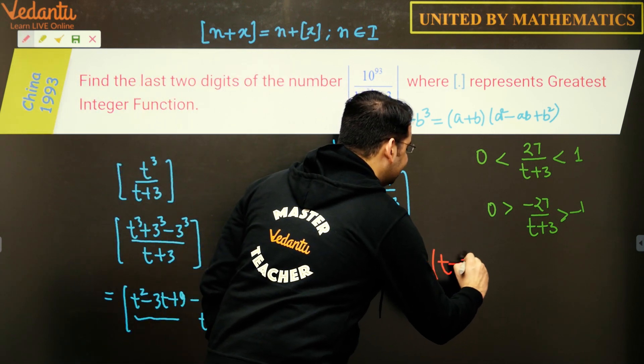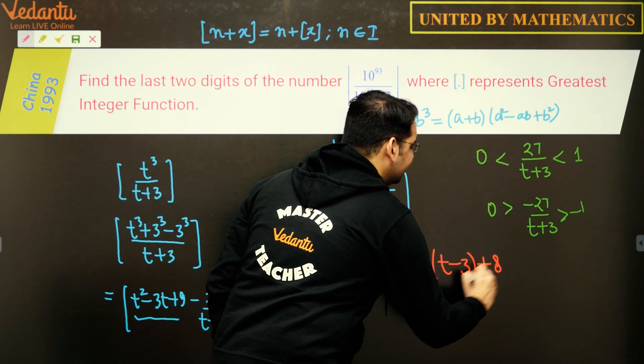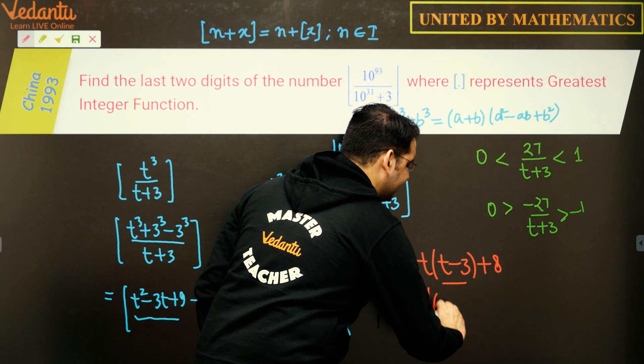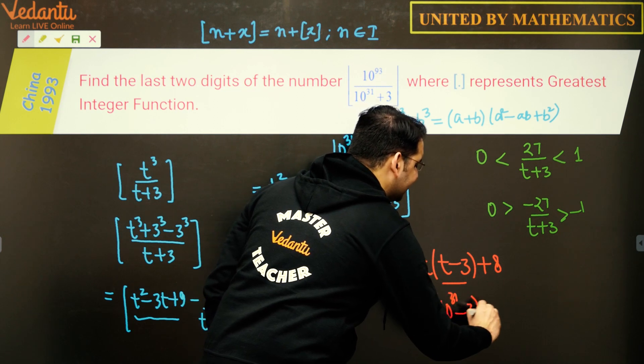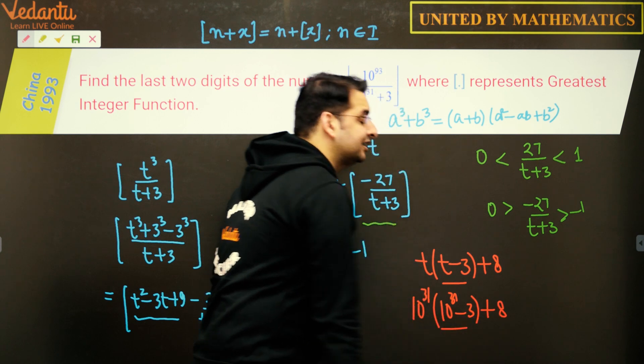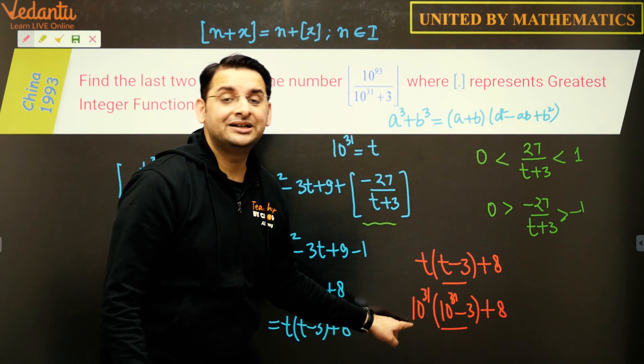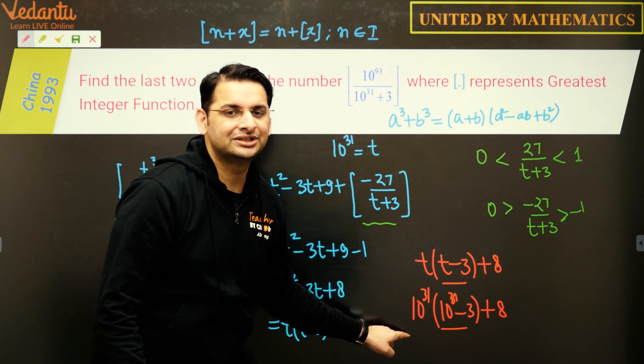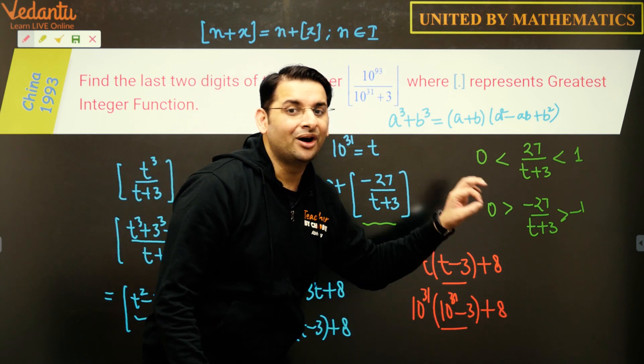If I put back the value of t, so 10 to the power 31 minus 3 plus 8, so this little expression is multiplied by 10 to the power 31, which means this number is followed by 31 zeros plus 8.